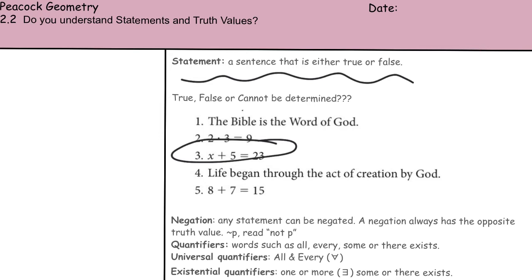A negation - any statement can be negated. A negation just has the opposite truth value. For example, if my statement is P, my conditional, maybe we represent it with the letter P. If we negate P, we put that little tilde in front and we read it not P.